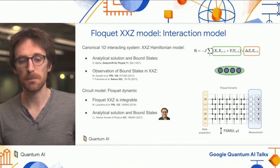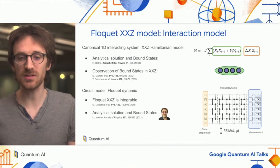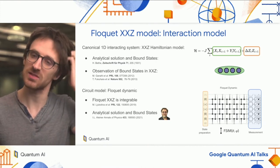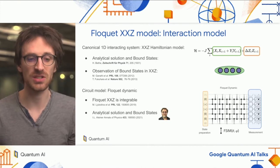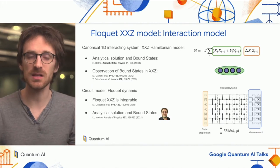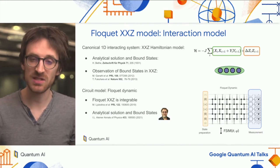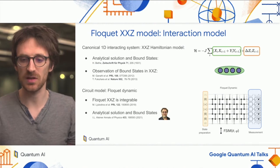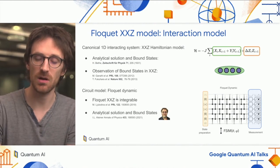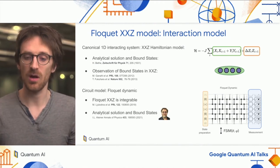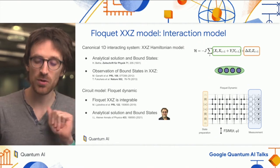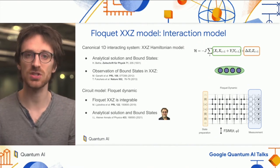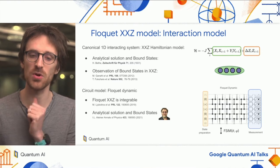In our quantum processor, simulating Hamiltonian dynamics directly is rather challenging. But what we can do very nicely is Floquet dynamics—just applying a circuit periodically. We can prepare a state, let it evolve through a periodic unitary evolution, and then do a measurement at the end.